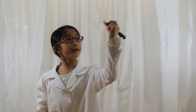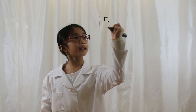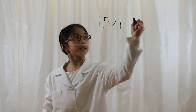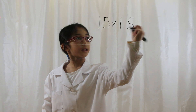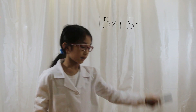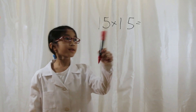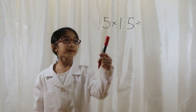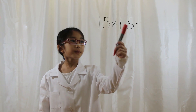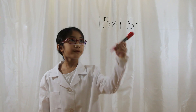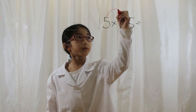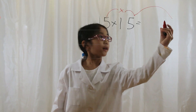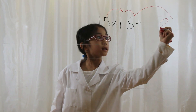Let's say you have 15 times 15. You look at the ones digits and say 5 times 5 is 25, so you multiply it. Then you put a 25 at the end.